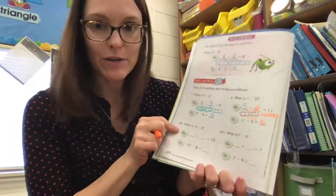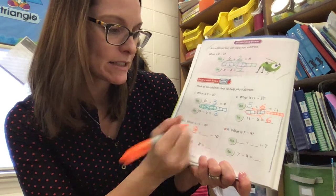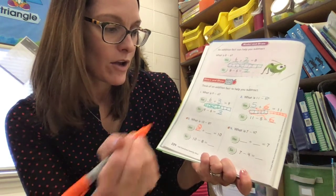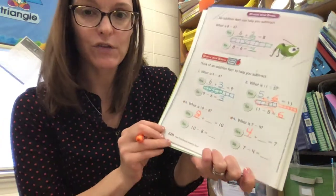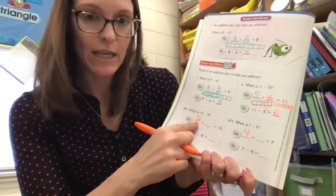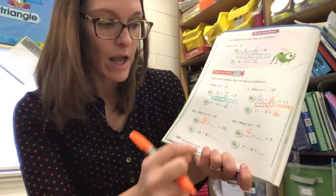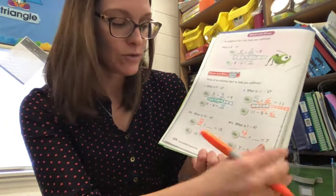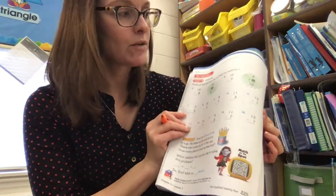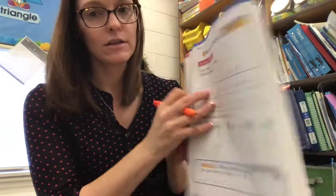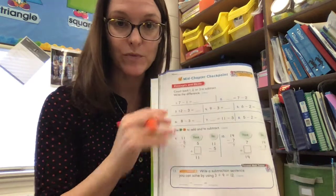I want to help you out a little bit for the two problems on the bottom. The first number on number three is eight, and the first number on number four is going to be four. So go ahead and fill those in, then do problems three and four, page 225, and page 226 on your own. Then take a picture and upload them to the slideshow. Okay, bye!